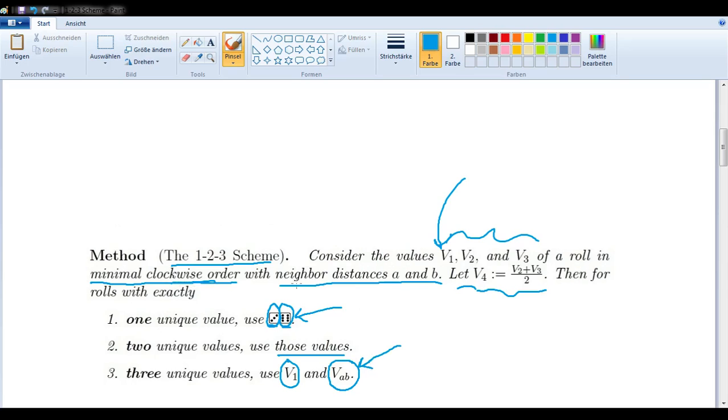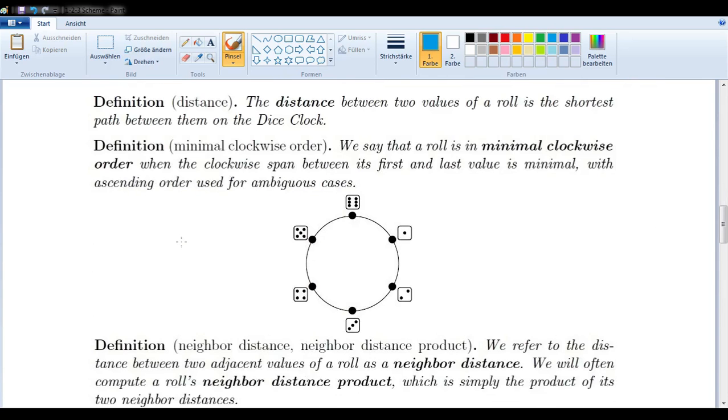We have minimal clockwise order and neighbor distances. We need to understand what that means. Minimal clockwise order is just a way of putting the values into an order that makes it easy to create a two-dice simulation. That is the crux of the matter here. The distance between two values of a roll is the shortest path between them on the dice clock. In other words, the distance between six and one is one and not five. This allows us to treat rolls that might otherwise not be thought of as being the same as being the same.